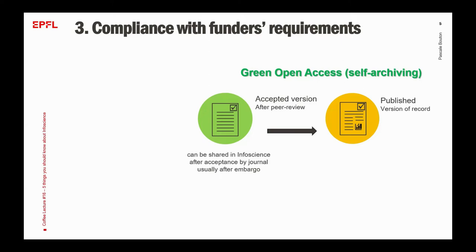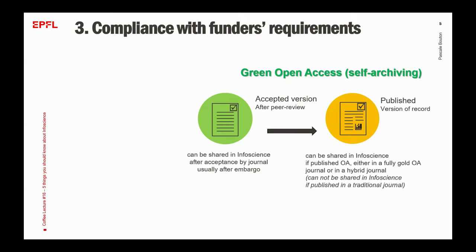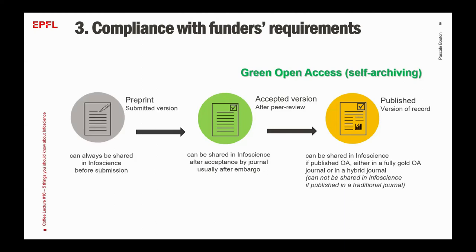In Infoscience, you are allowed to share the accepted version of your article — the one which is available after peer review but prior to any production steps — usually after an embargo. And you can possibly share the published version if you publish in open access, even in a fully gold open access journal or in a hybrid journal. What I would like to underline here is that you can disseminate through Infoscience one or more of the free versions of the paper. You can also specify the version of your full text and set an embargo period before releasing the full text in open access.